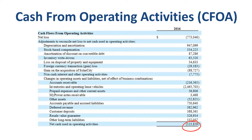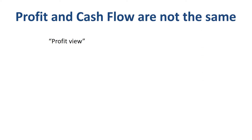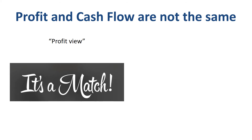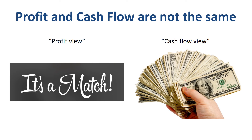Tesla and many other companies use the indirect method of cash flow reporting. You start with the net income — or in Tesla's case a net loss of $773 million for the year — and then make adjustments to reconcile that net loss to CFOA. Let's step back and talk about profit versus cash flow. The way you measure profitability is different from the way you measure cash flow. In the profit view, the matching principle is very important, matching revenues and expenses to the period in which they occur. In the cash flow view, the moment when cash is flowing in and out of the company is key. Both views give you insights into the financial performance of a company.